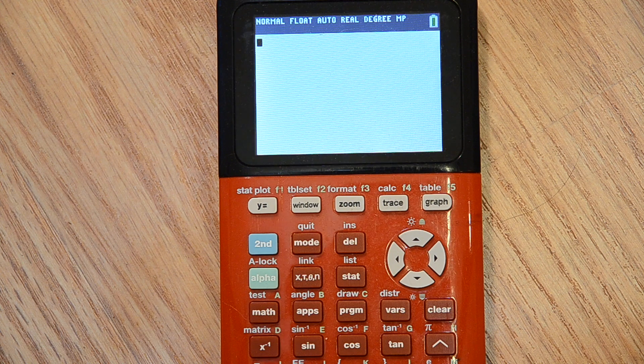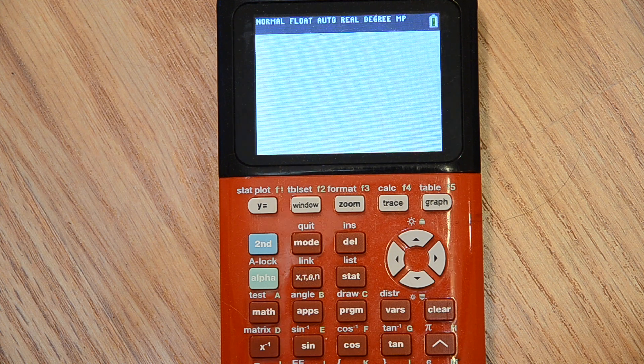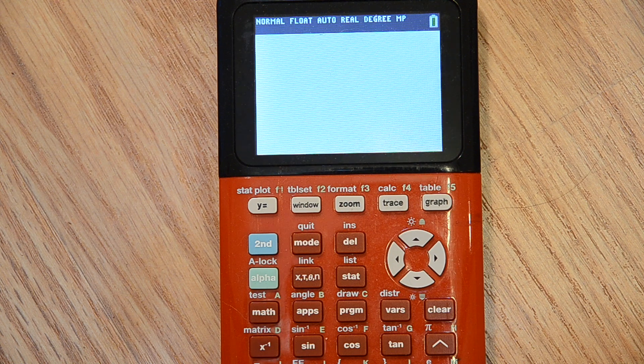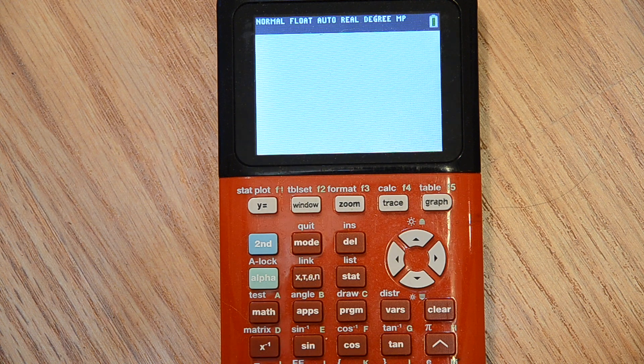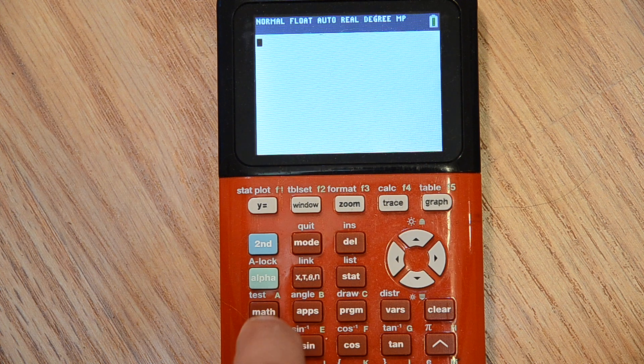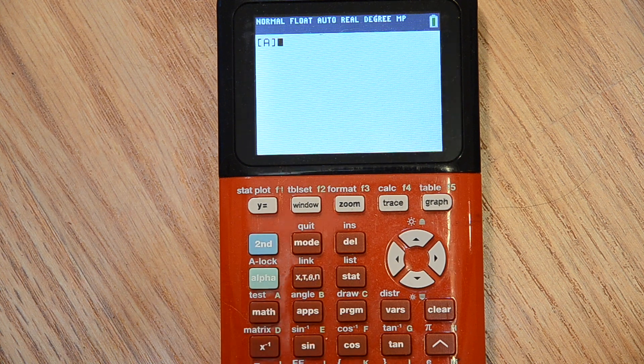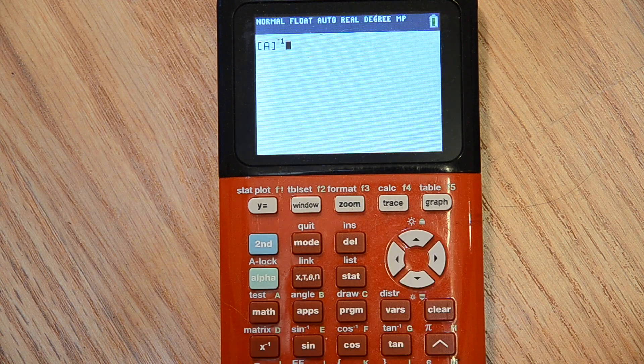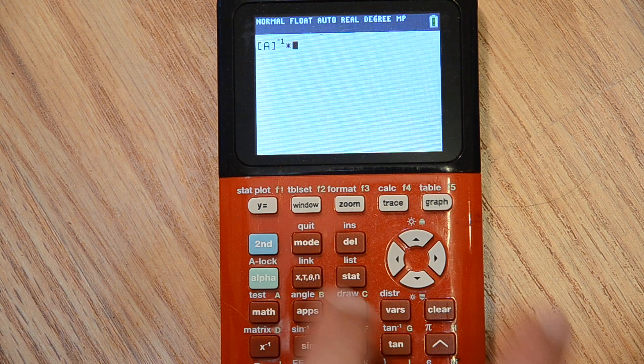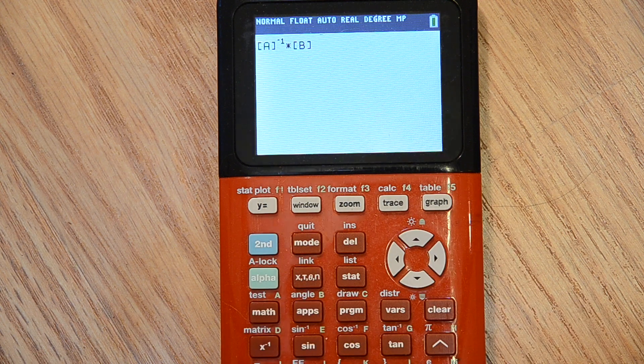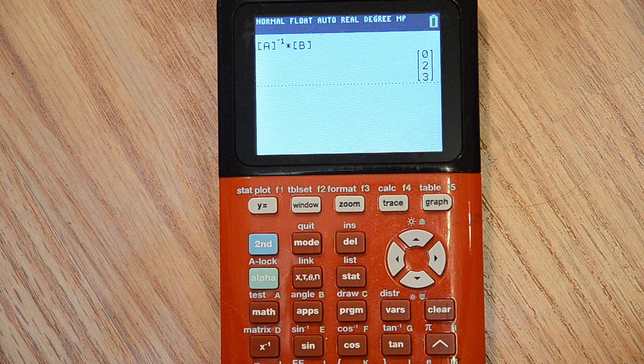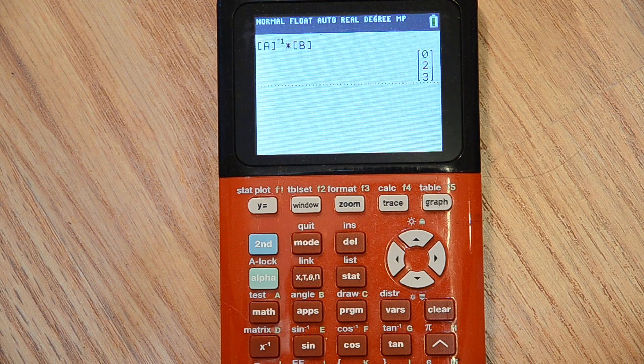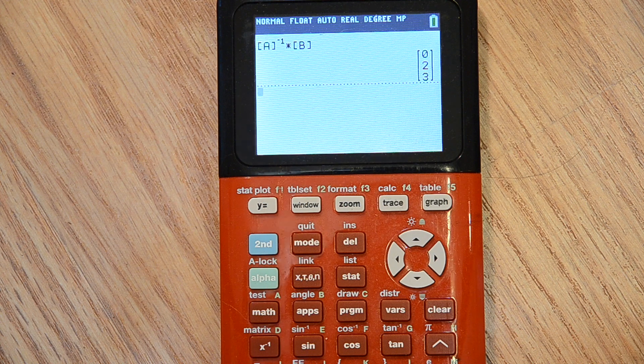Now remember we had matrix A times our three by one matrix of alpha, beta, K, was equal to the three by one matrix of four, negative one, four. If I multiply the inverse matrix to both sides, and this is how I am going to do that, I want to do the inverse of matrix A times matrix B. So I am going to go second matrix, choose A, and then I am going to put on an exponent of negative one, asking the calculator for the inverse of that matrix, and multiply that by matrix B. And there is my answers for alpha, beta, K, which was zero, two, and three, like you saw in the video.